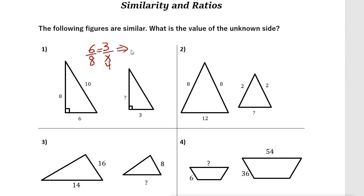6 times X is 6X equals 8 times 3, which is 24. If you divide both sides by 6, these two cancel out. X equals 24 divided by 6, which is 4. So X here is 4, or this side is 4.